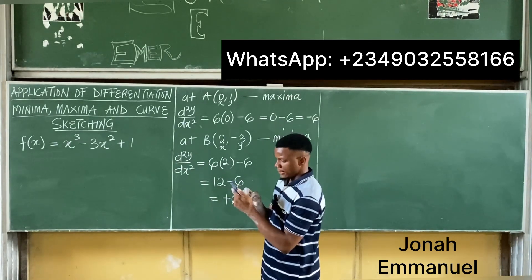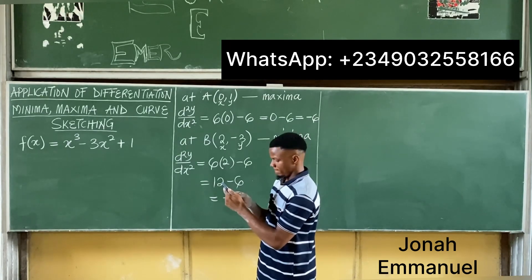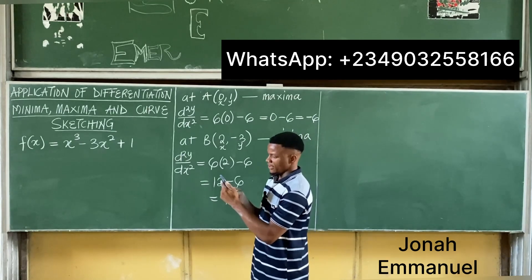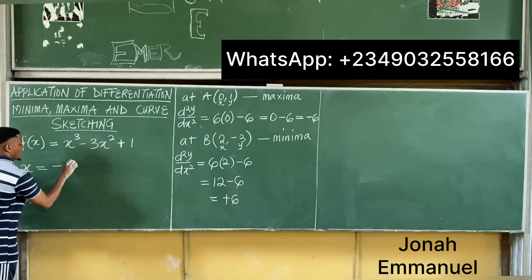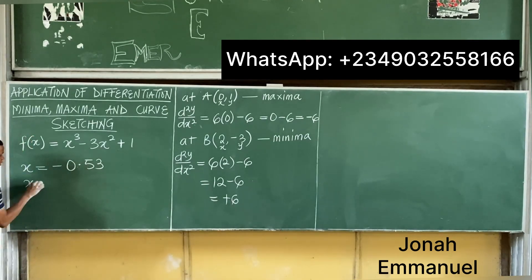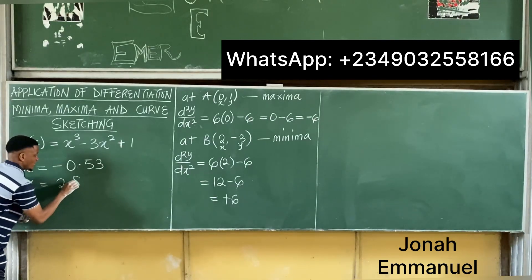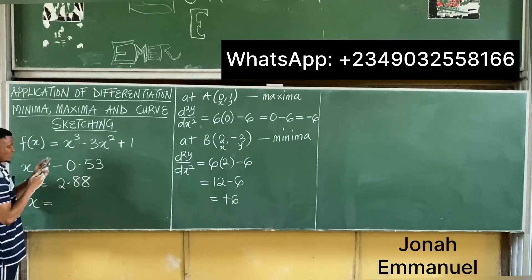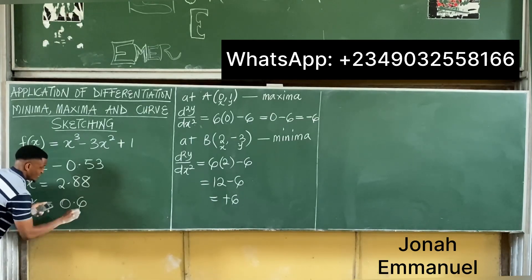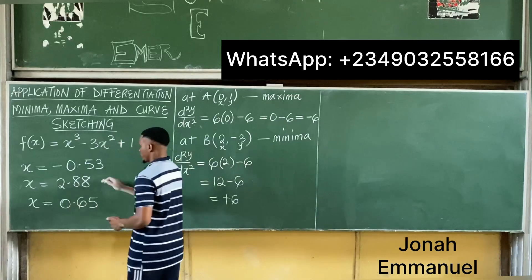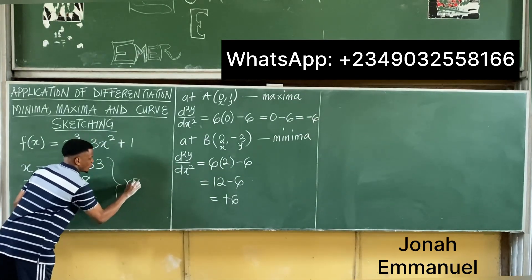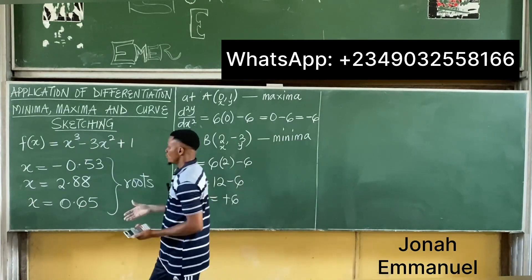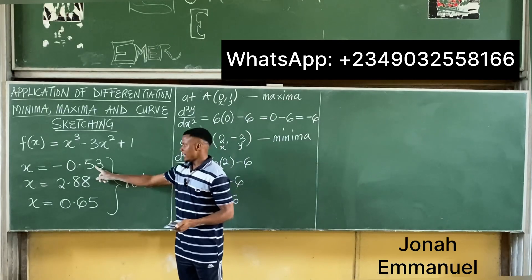Using a calculator, I find that x equals minus 0.53. I expect 3 roots. My second root is 2.88, and my third root is 0.65. These are the three roots of this equation, meaning the curve will cut the x-axis at these three points.